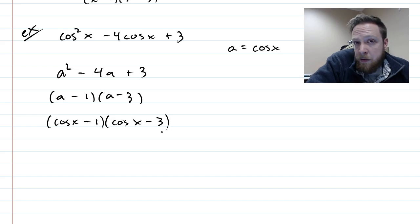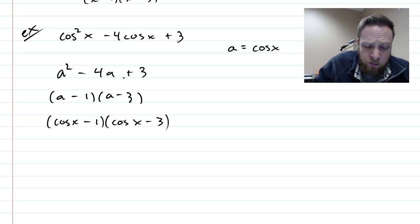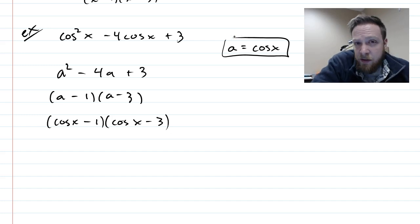Now, a lot of you will be able to do this without actually writing it as a squared minus 4a plus 3. And that's okay. But it gets a little more complicated later on. And so I suggest that you just write it out there, even if you don't write this to the side. And then factor normally and plug the cosine back in.